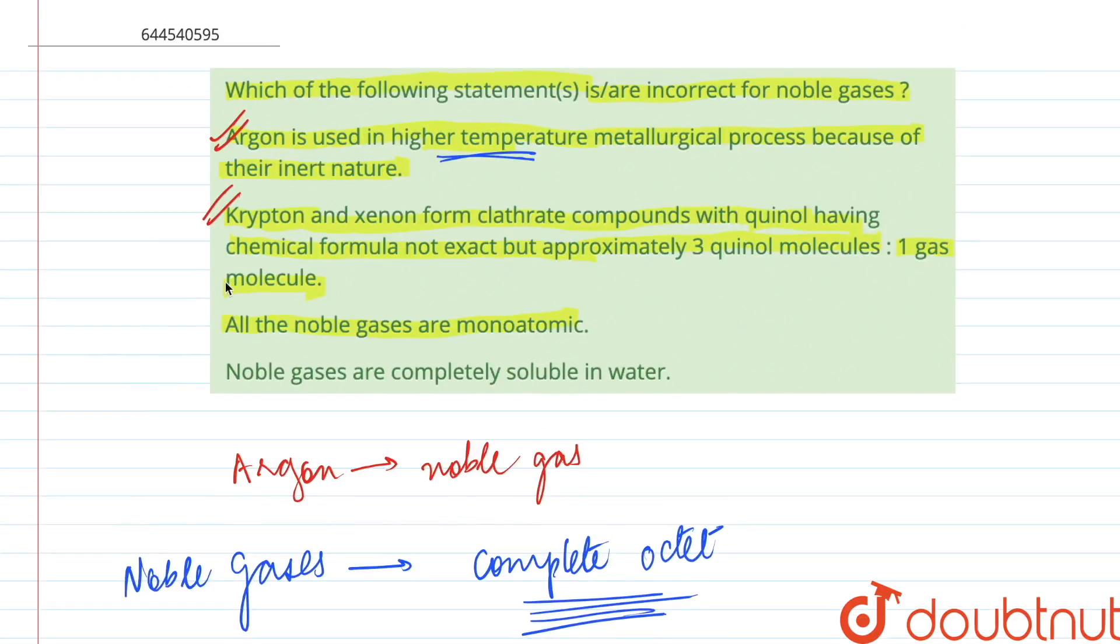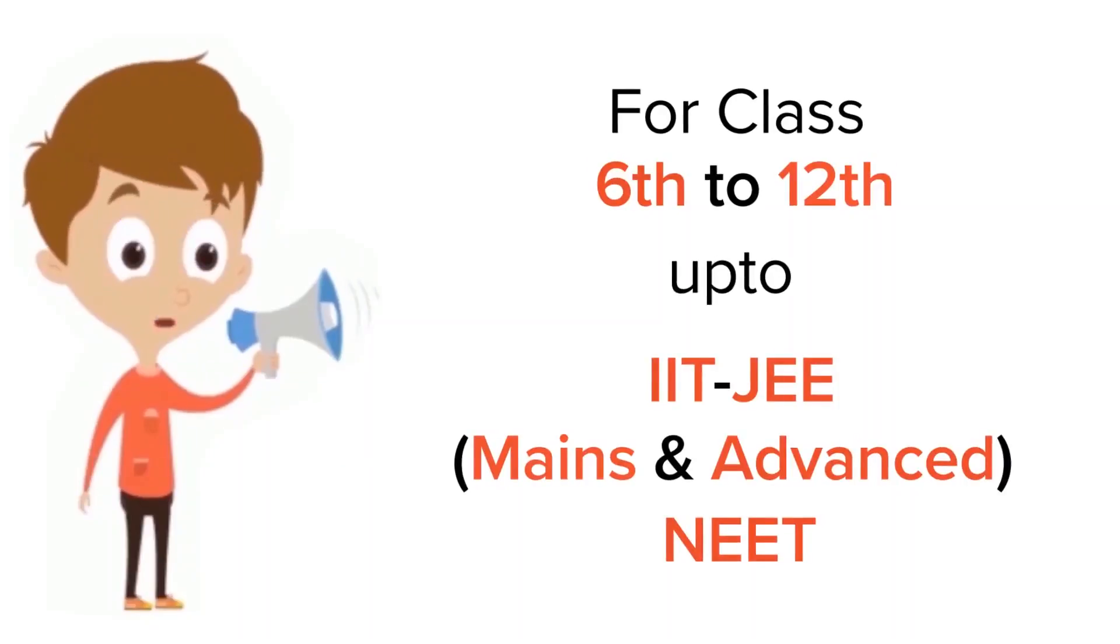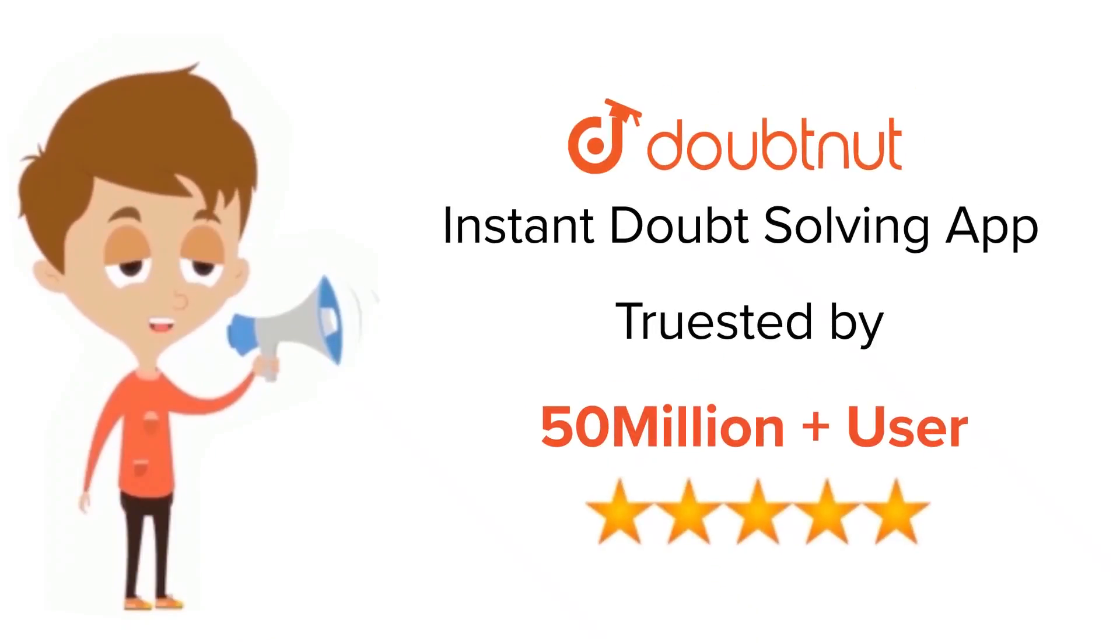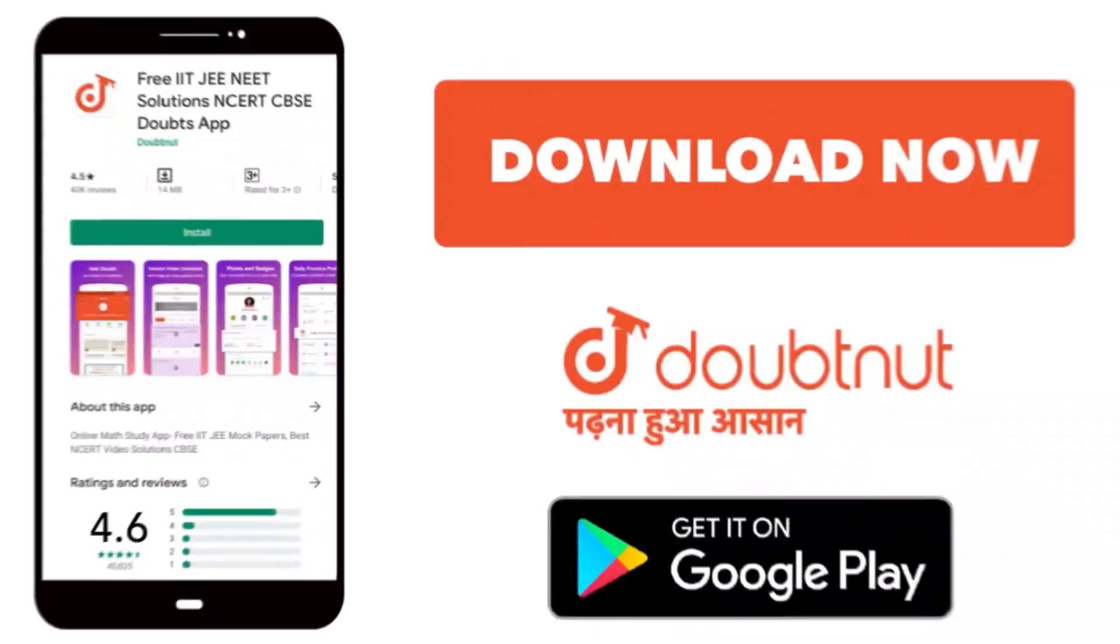So the last one says that noble gases are completely soluble in water. This given statement comes out to be false or incorrect since they are insoluble in water because of their inert or unreactive behavior. So we had to identify the incorrect statement which comes out to be D. For class 6-12, IIT-JEE, and NEET level, trusted by more than 5 crore students, download Doubtnet.